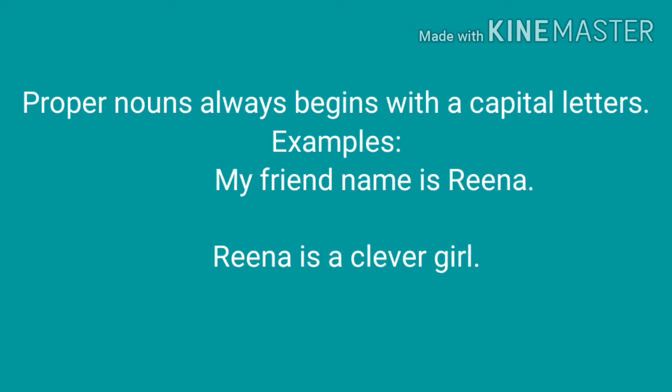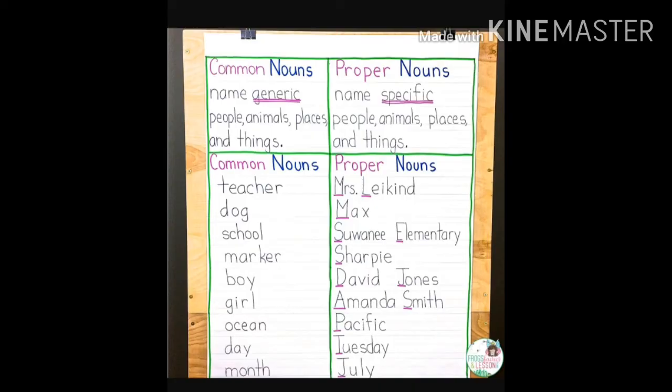So children, proper nouns always begin with a capital letter whenever they appear. Let us see some more examples of common nouns and proper nouns. Common nouns: teacher, dog, school, marker, boy, girl, ocean, day, month. Children, these are the general names, or common nouns.